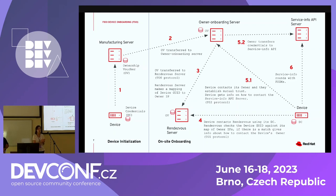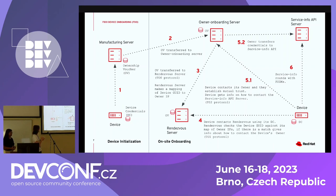The manufacturing server gets an ownership voucher. This ownership voucher is a cryptographic document — an X.509 certificate. The FDO protocol uses it to verify that you are the owner of the device at a given point in time. So at this point the owner of the device is the manufacturing server. As the device is moved to the onboarding site, the manufacturing server transfers this ownership voucher to the owner onboarding server, so that the owner of the device becomes the owner onboarding server.